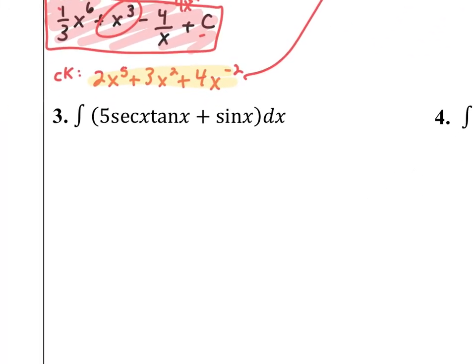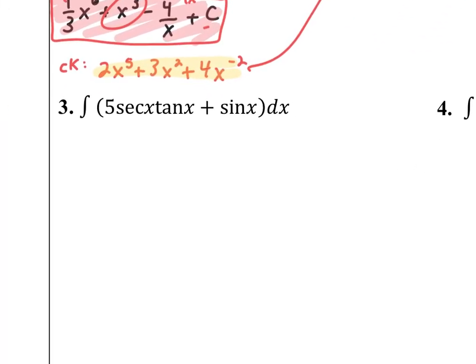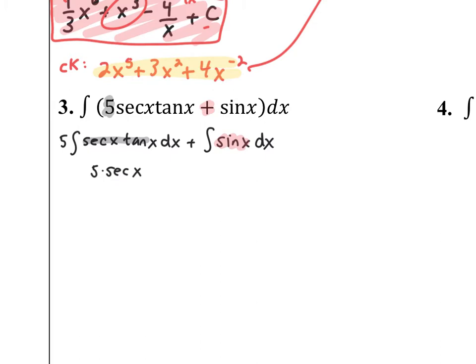In question 3, I first split across the plus sign and pull the 5 to the outside of the integral sign. Secant x tangent x is the derivative of secant x, so the first part is 5 times secant x. Sine x is the derivative of negative cosine x — a common mistake is to confuse the signs here. Working backwards: the derivative of cosine x is negative sine x, so positive sine x comes from negative cosine x. Don't forget plus c.